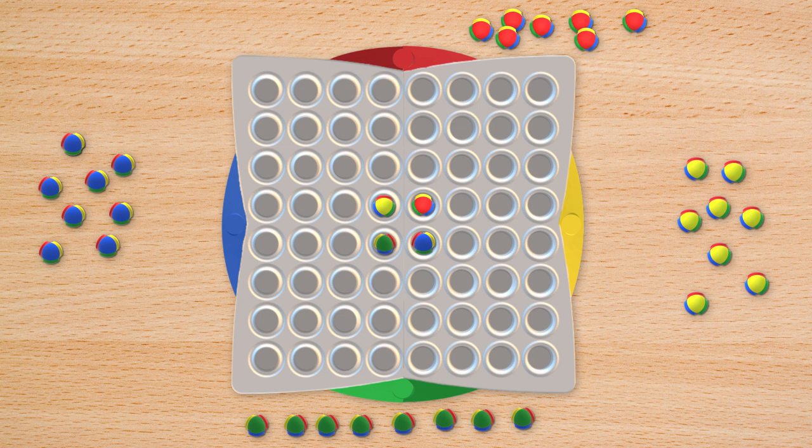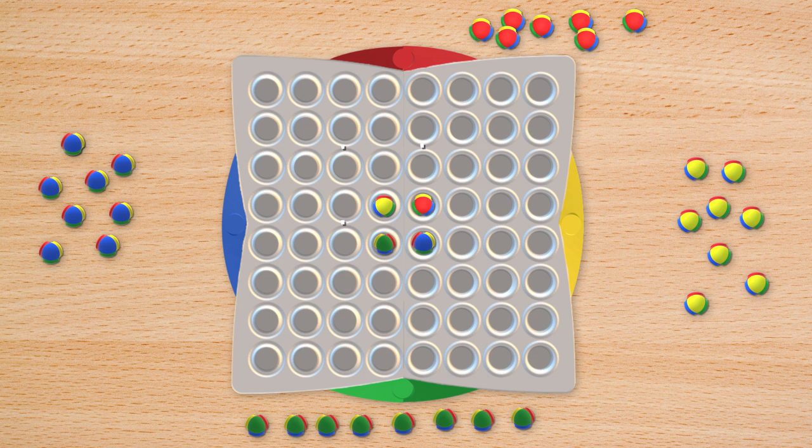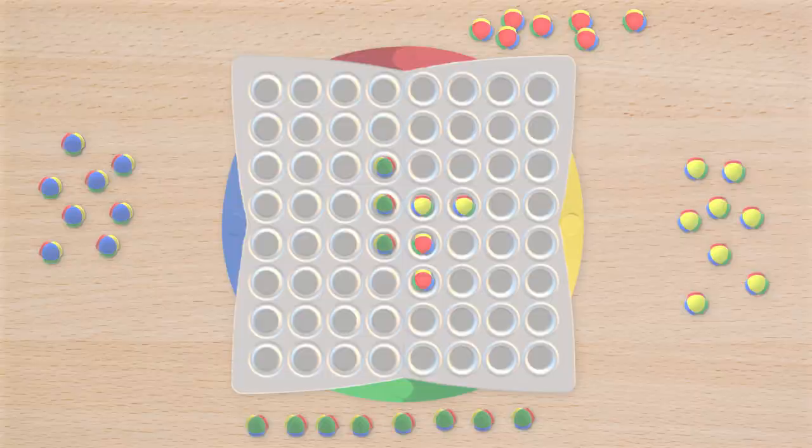Players start the game with a single ball of their color in the center of the board. On your turn, you must place one ball of your color into one empty spot. Your ball must be placed in a spot that traps one or more of your opponent's balls. In this example, you'd have these spots to choose from.